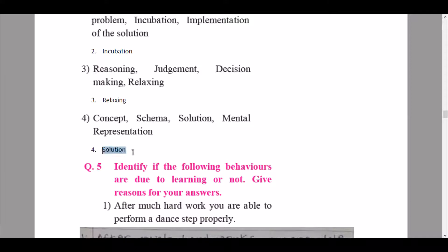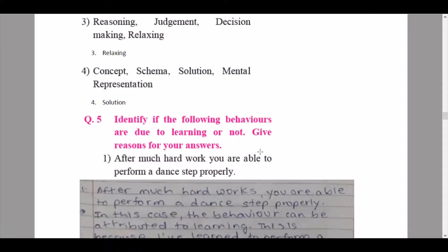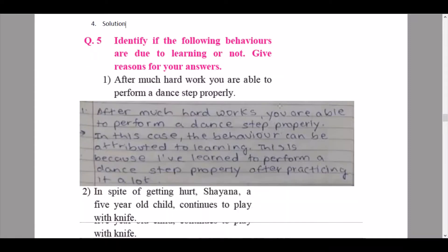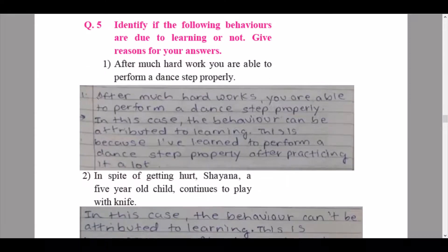Then we continue to fourth one: concept, schema, solution, mental representation. Out of this, solution is the odd one out. So we move forward to our question number five: identify if the following behaviors are due to learning or not. Give reasons for your answers. After much hard work you are able to perform a dance step properly. So here the answer is in this case the behavior can be attributed to learning.